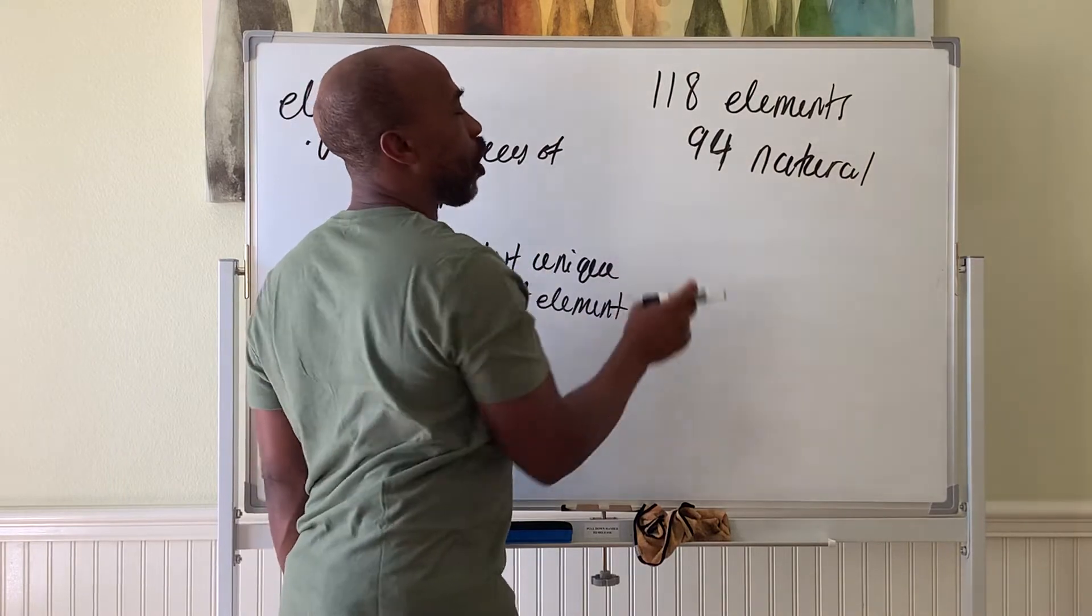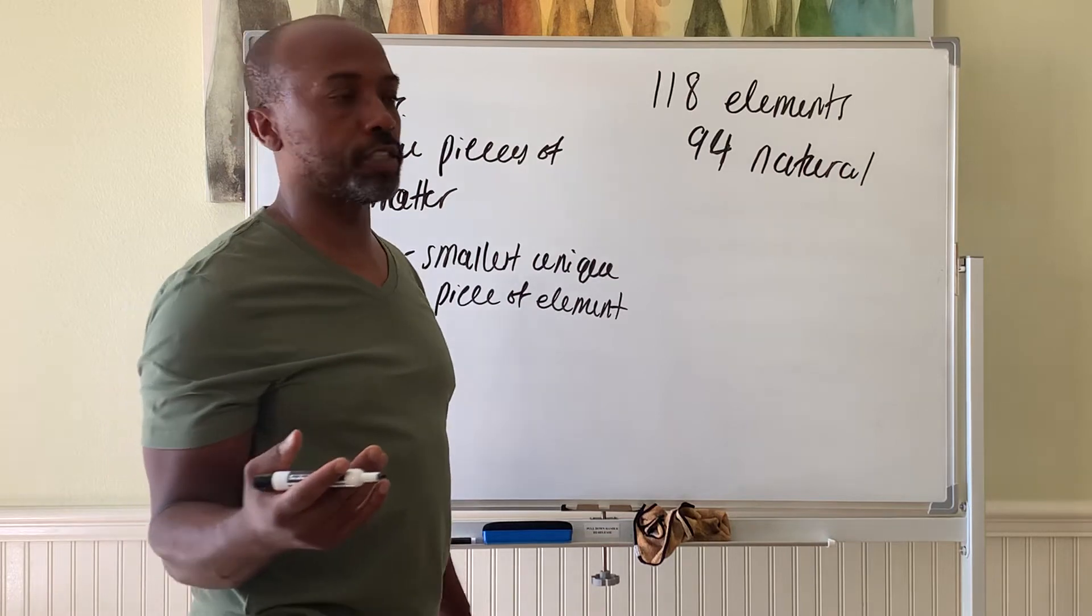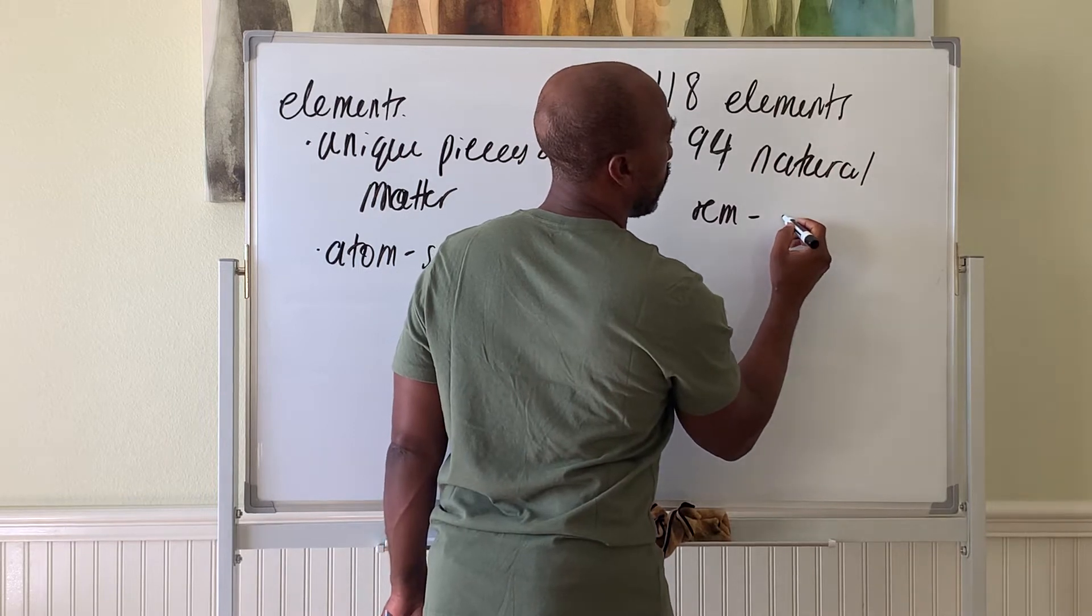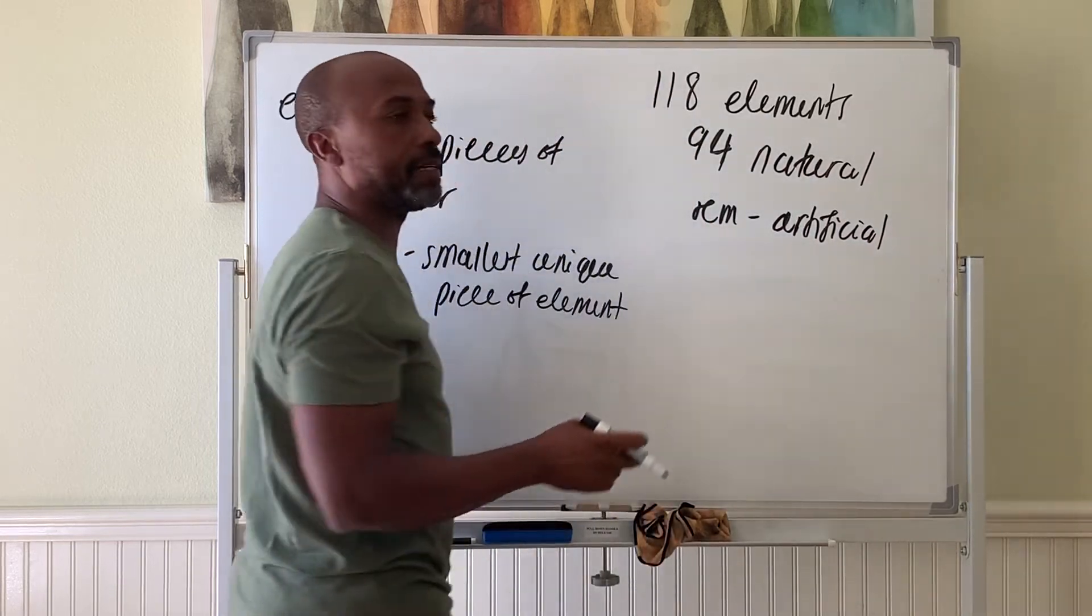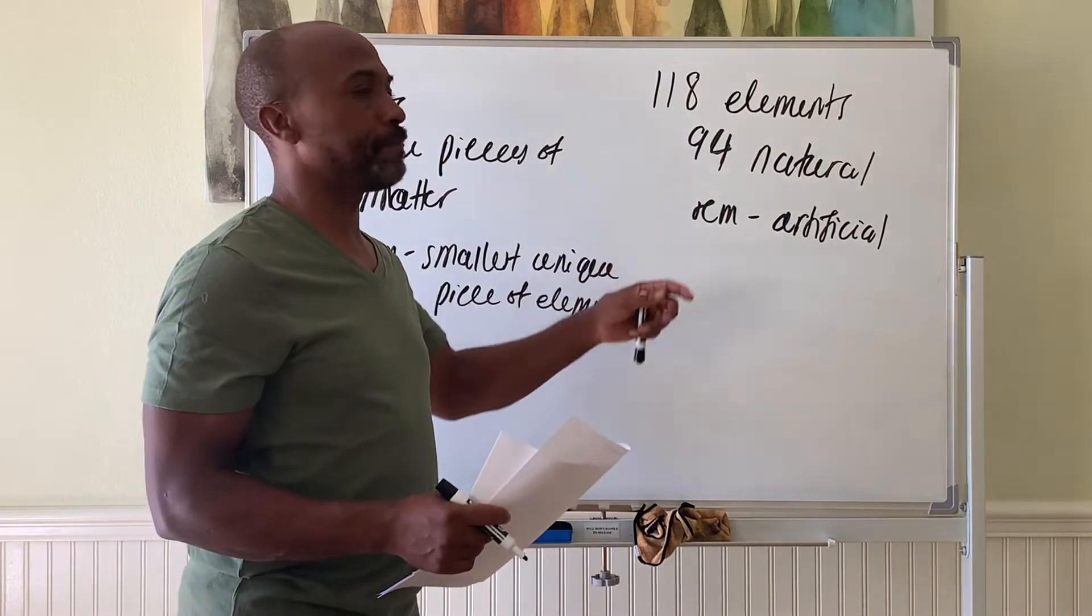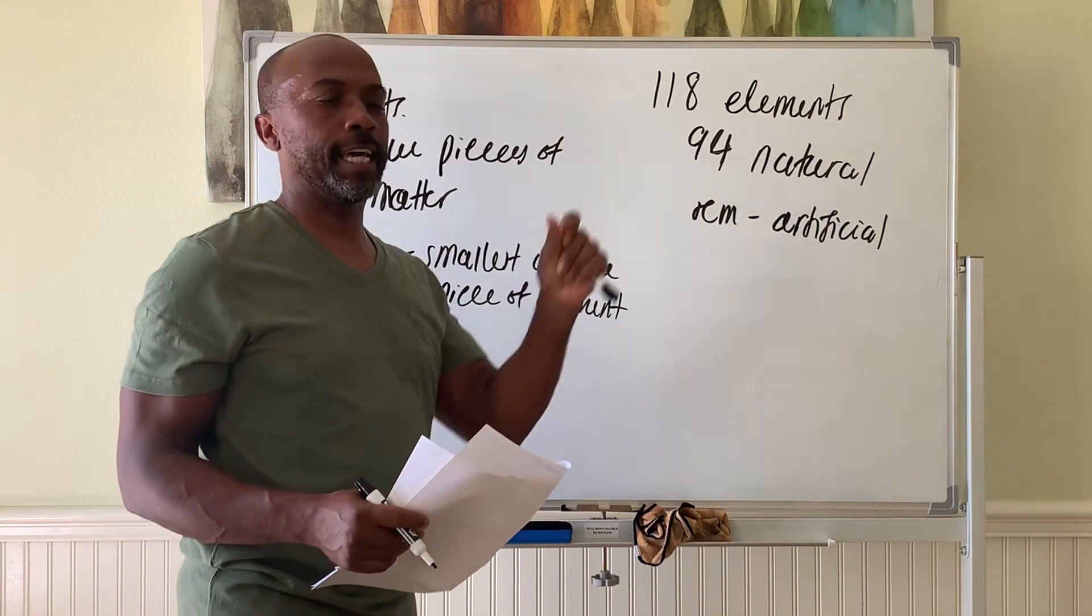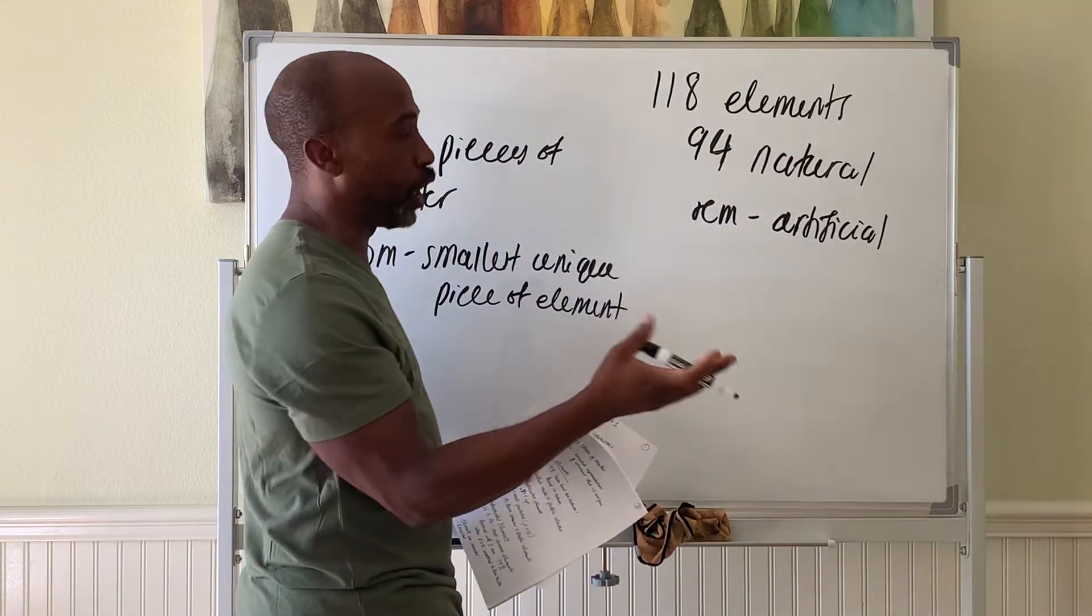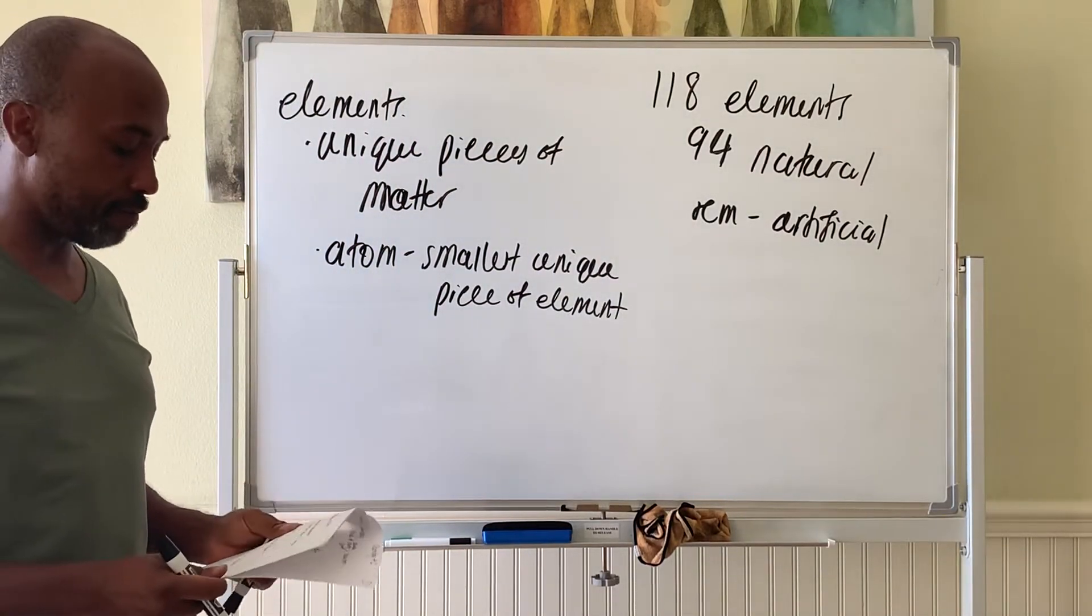The others are made artificially in things called particle accelerators. The remaining are artificially made, things like Californium or Einsteinium. These elements typically have a very short half-life. As soon as they're formed in the particle accelerator they decay very quickly. But if you can measure them, then they're real, so we count them among the fundamental pieces of our universe.